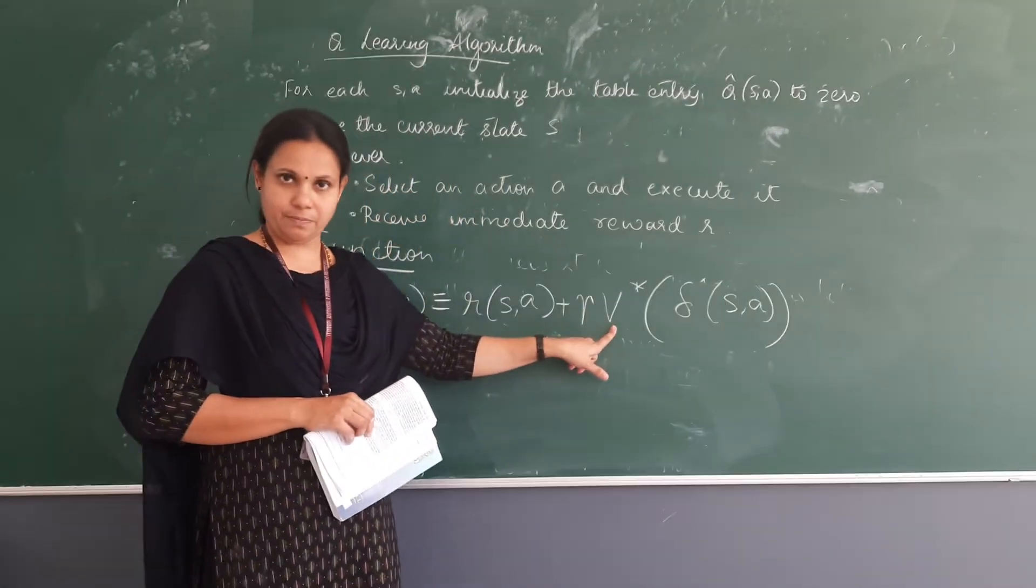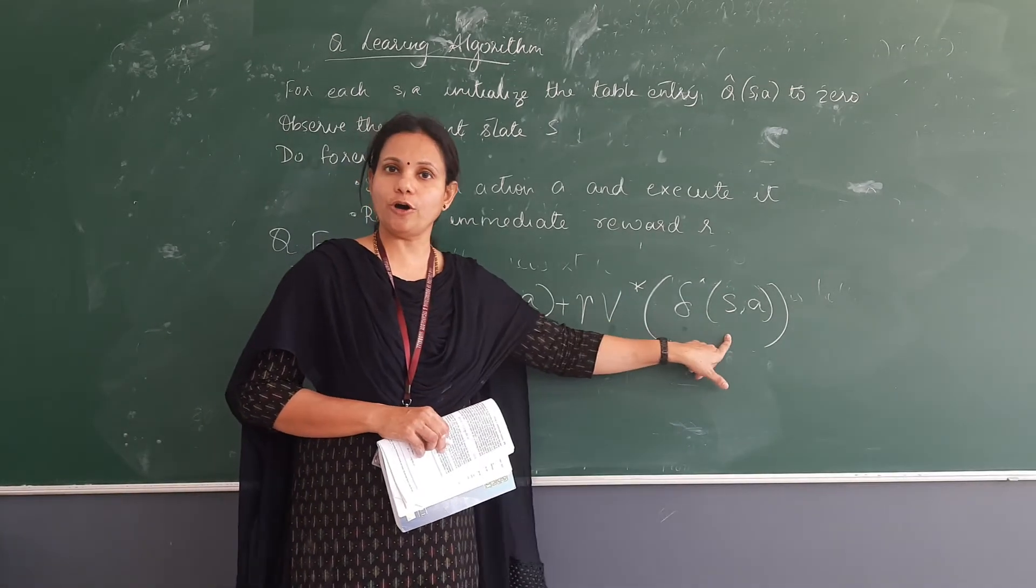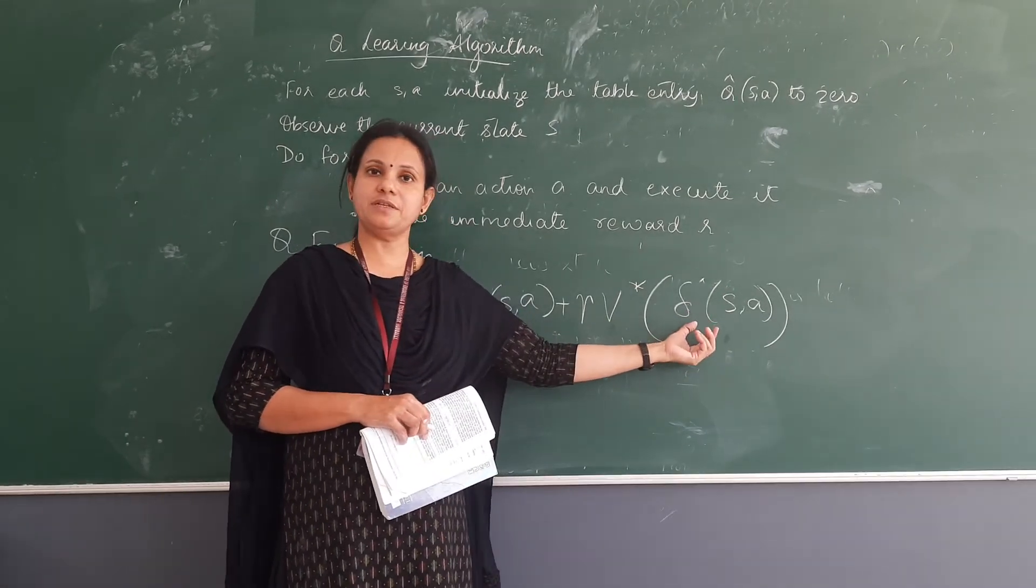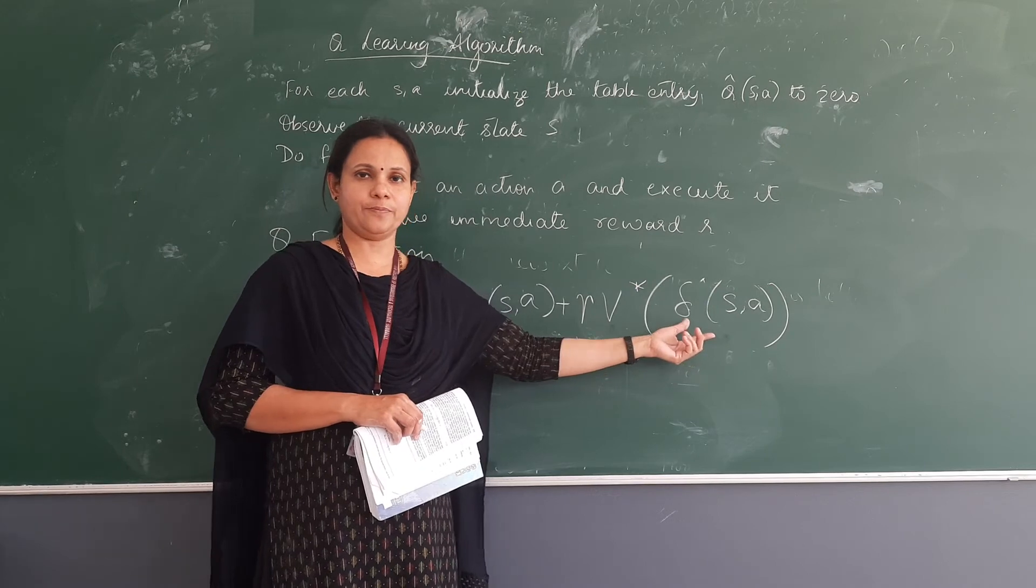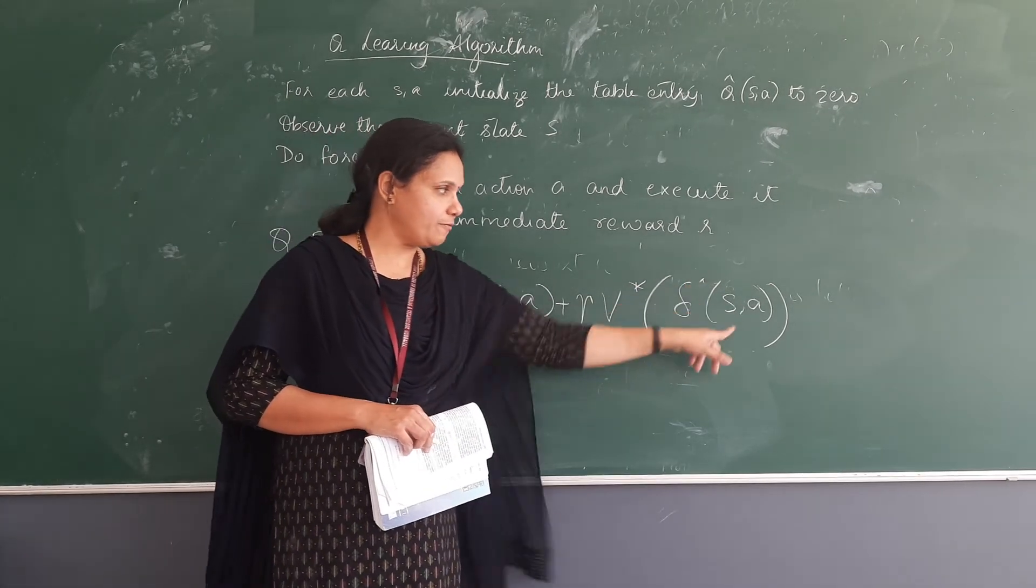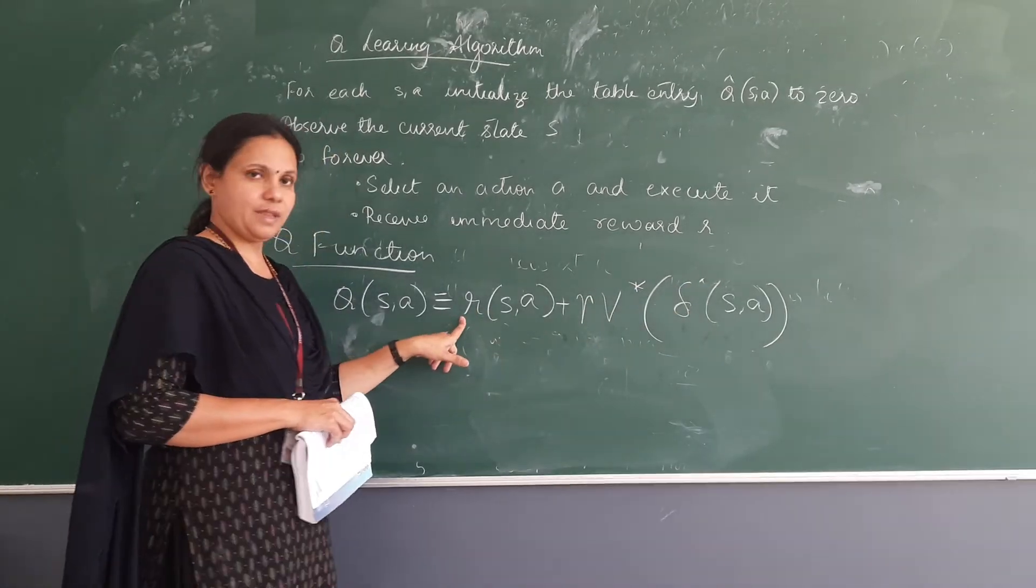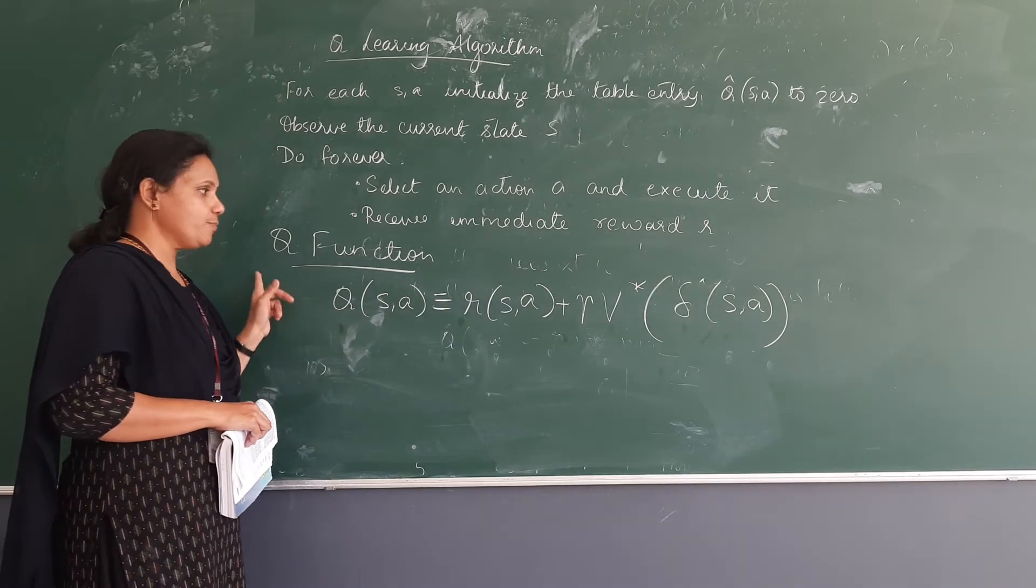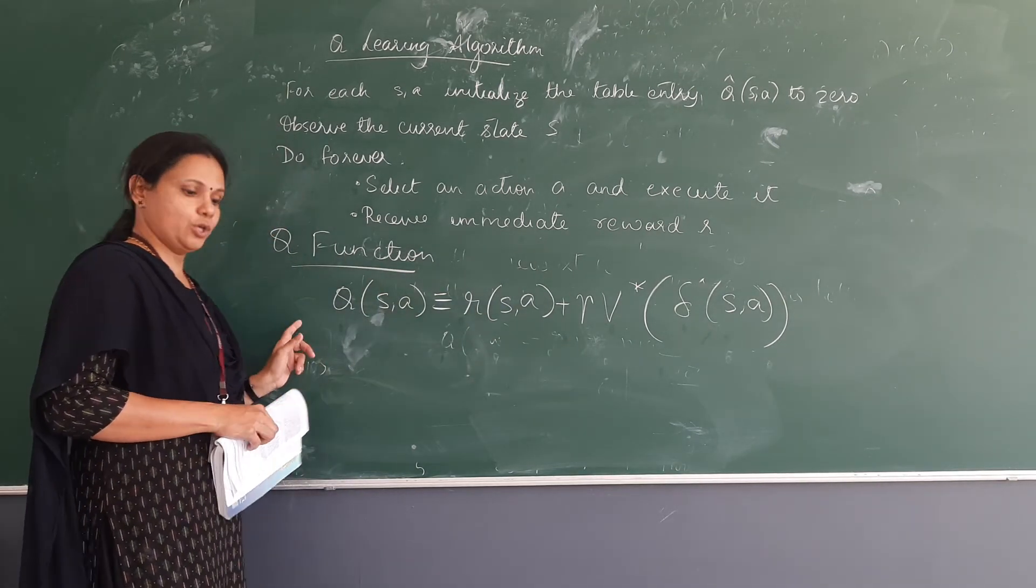What is this? This is the maximum. Maximum of Q(state, action). We are representing that as a function delta. So the maximum of this times gamma plus the reward will be your Q function. So this is what we call as a Q function.